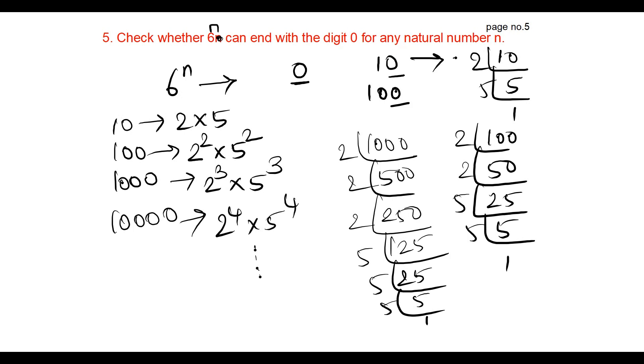So any number ending with 0 will be the product of 2 and 5, with some powers.